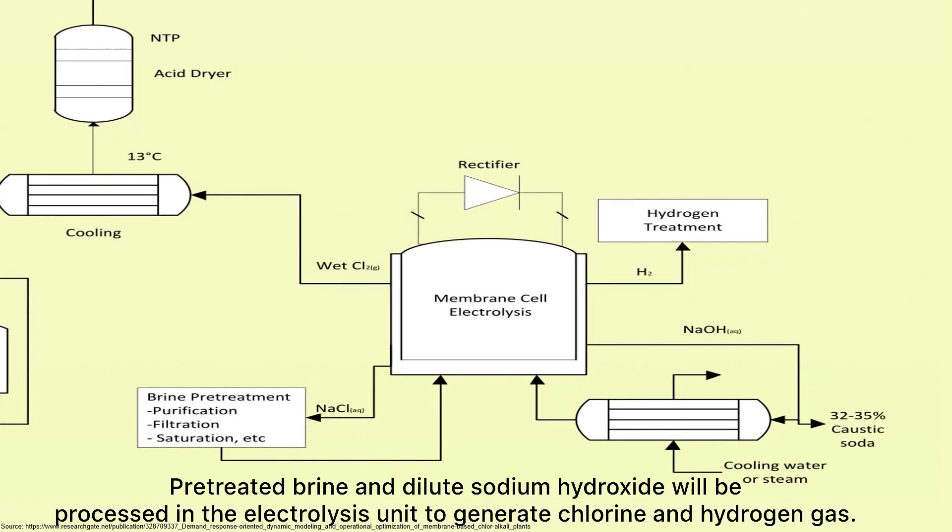Pre-treated brine and dilute sodium hydroxide will be processed in the electrolysis unit to generate chlorine and hydrogen gas.